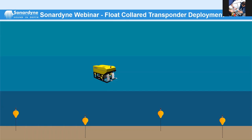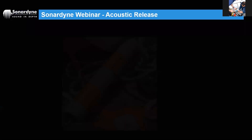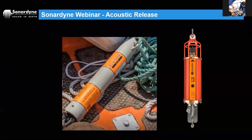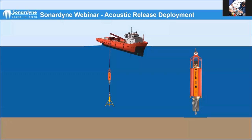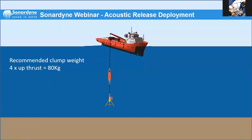For more accurate placement, an acoustic release beacon can be used — tracked with USBL as it's lowered. Once in the desired position, a release command is sent acoustically, dropping it onto the seabed. Recovery is the same process: send a release command to the float collar unit and it floats to the surface.